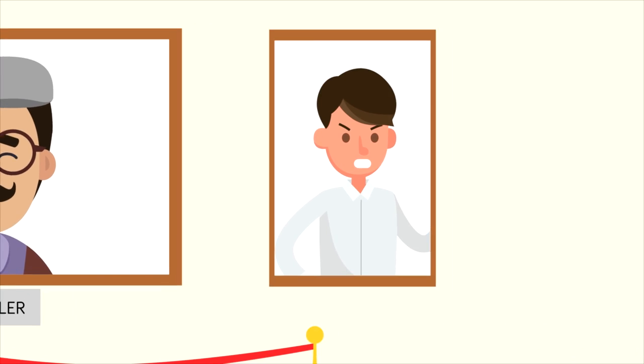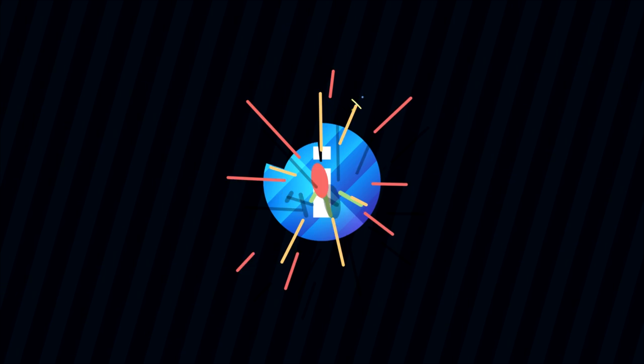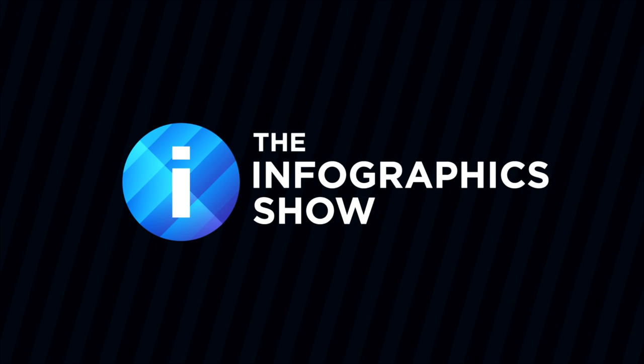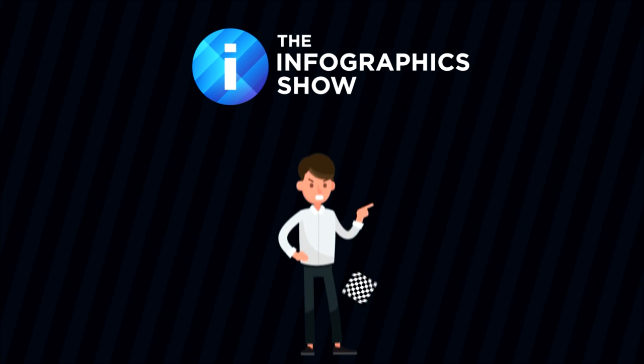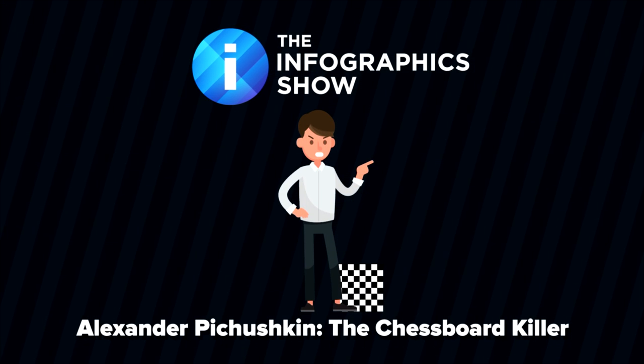The man today is slightly different, in that he didn't really choose a certain kind of victim. Anyone would do it seems. He did once say, for me, life without murder is like life without food for you. So it's understandable that he wasn't picky. Welcome to this episode of the Infographics Show, Alexander Pichushkin, the Chessboard Killer.